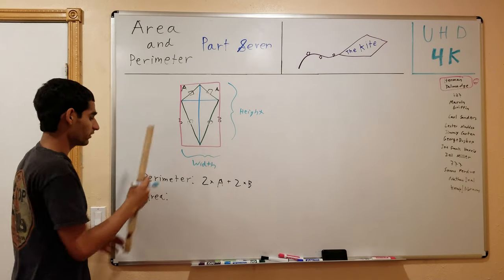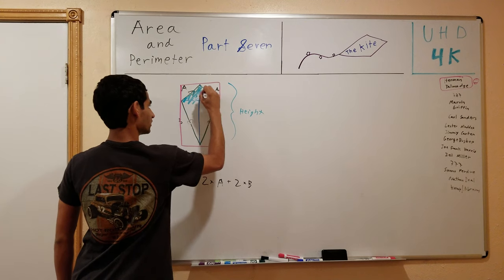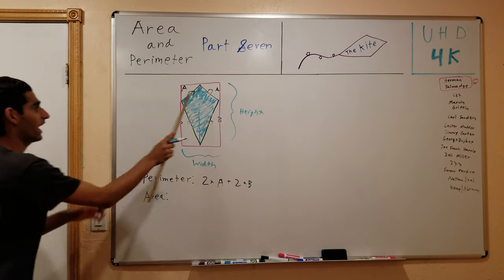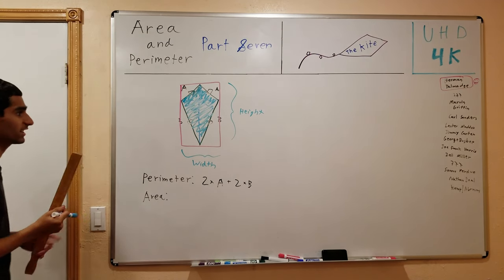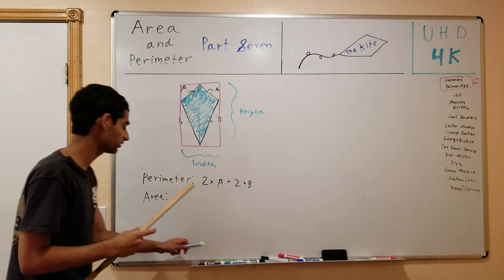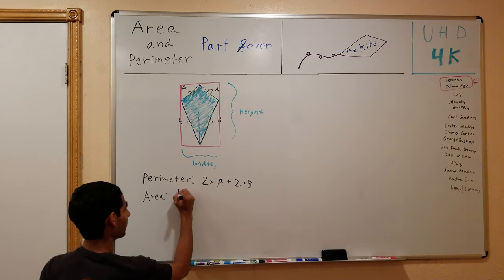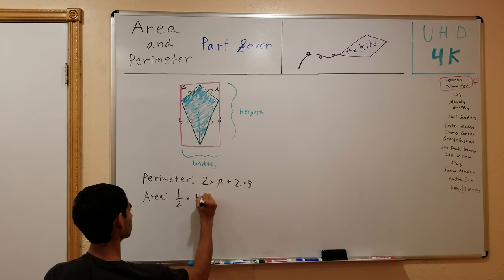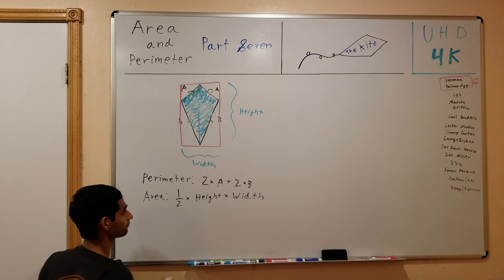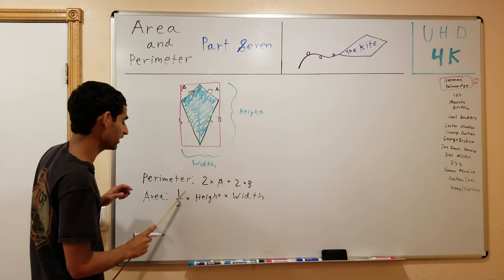The area of this entire kite — which I am going to shade in — is equal to half the area of this rectangle. So I have a rectangle formed by the height and the width of the kite, and the kite is half the area of that rectangle. So to find the area of the kite, I simply have to do one half times height times width. Multiplying the height by the width forms the rectangle, which is twice the area of the kite, so I multiply by half to get the area of the kite.